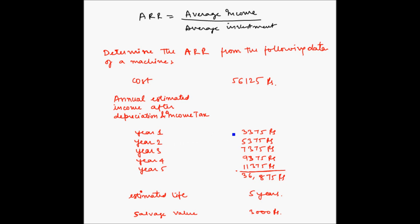For year one, the income will be 3,375 rupees. For year two, 5,375 rupees. For year three, 7,375 rupees. Year four, 9,375 rupees, and year five, 11,375 rupees. The total of the incomes for the five years is 36,875 rupees. It is expected that this machine can be used only for five years, after which it will be sold as scrap, with an estimated salvage value of 3,000 rupees.